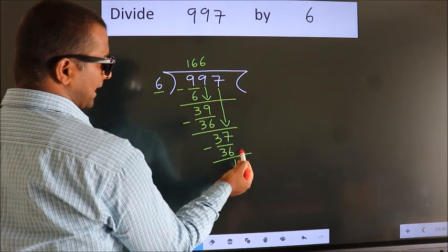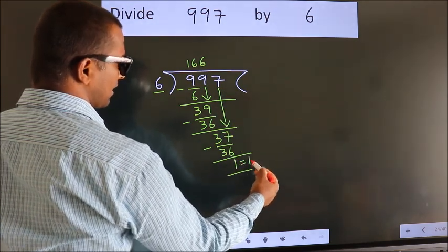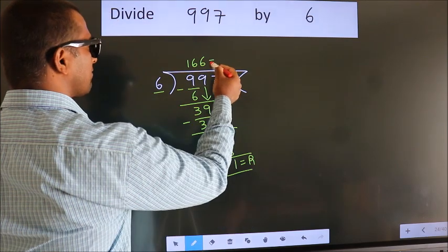No more numbers to bring down. So, we stop here. This is our remainder. This is our quotient.